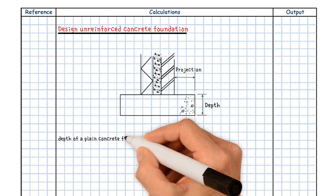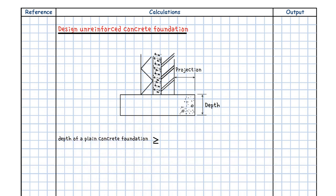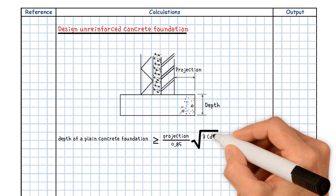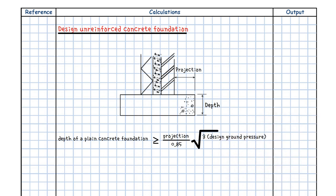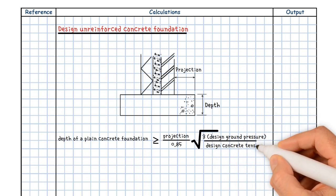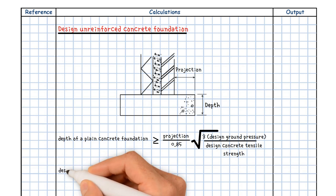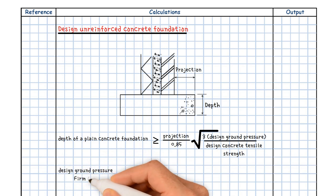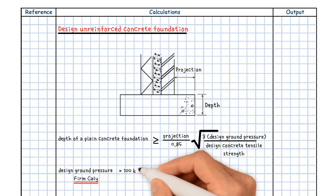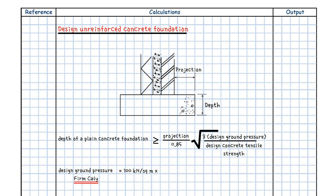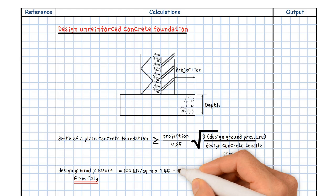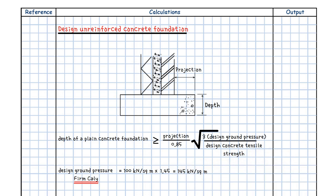The depth of a plain concrete foundation must be equal to or greater than the projection of the foundation from the wall or column, divided by 0.85, times the square root of three times the design value of ground pressure over the design value of concrete tensile strength. A typical design value of ground pressure for firm clay equals 100 kN/m² multiplied by an average partial factor for permanent and variable loads of 1.45, which equals 145 kN/m².